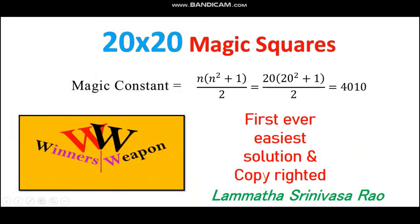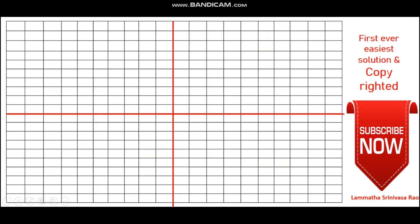After solving the 20 by 20 magic square constant by using the formula, we got the answer 4010. By using that magic constant we can solve the 20 by 20 magic square.